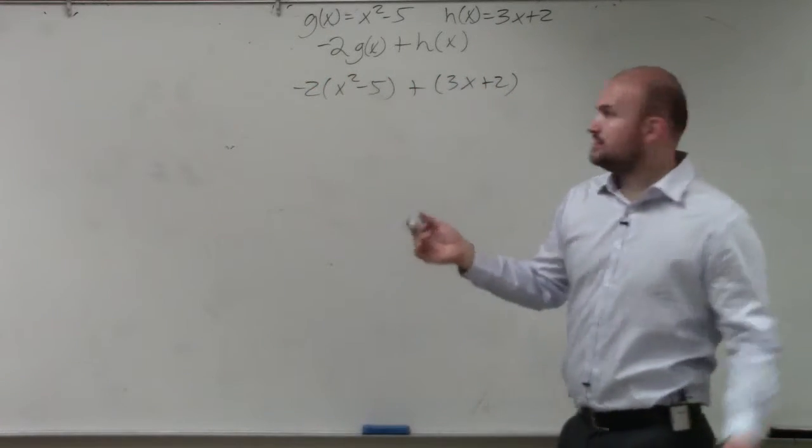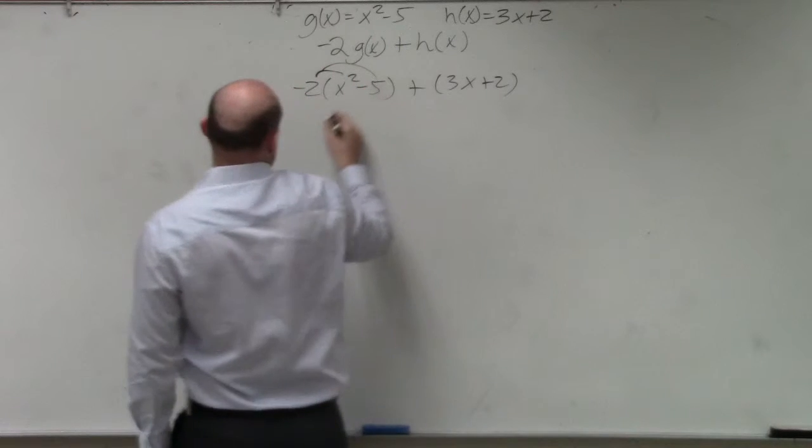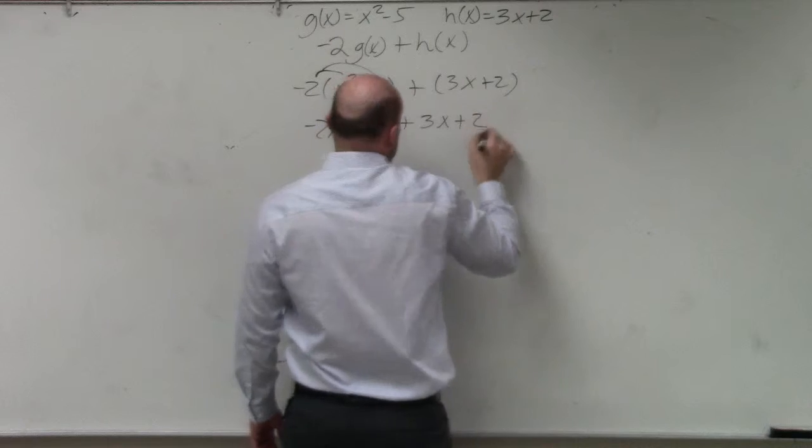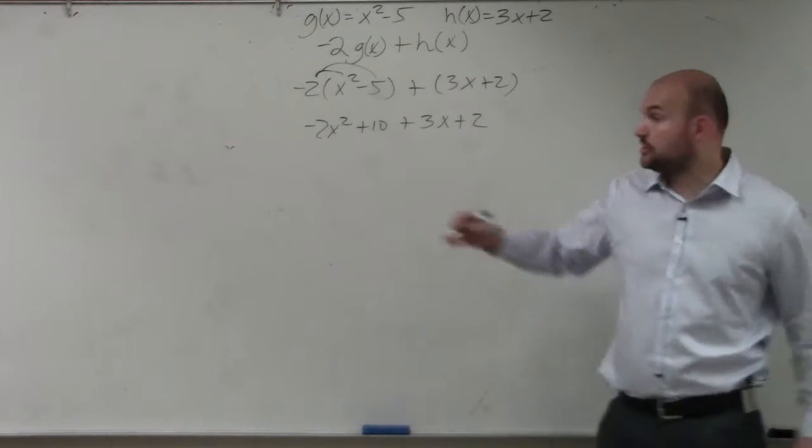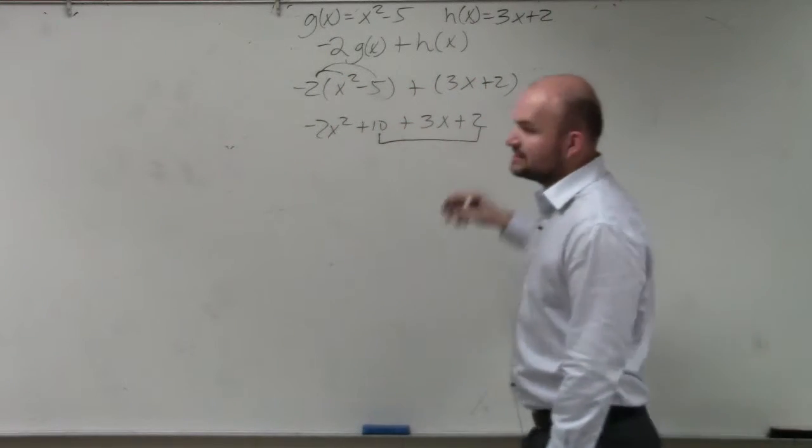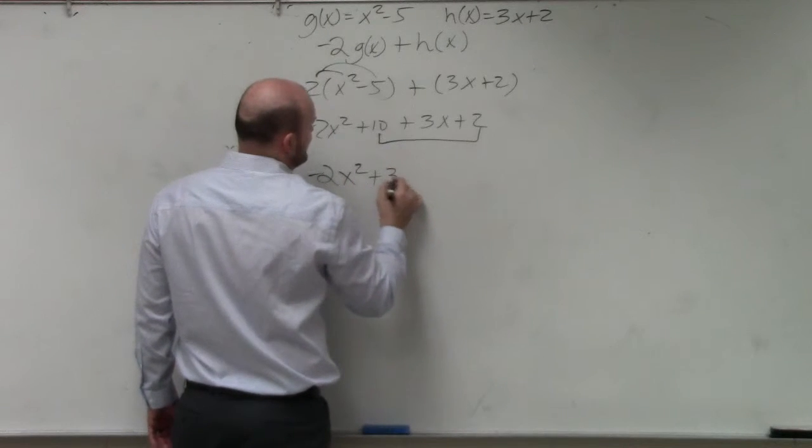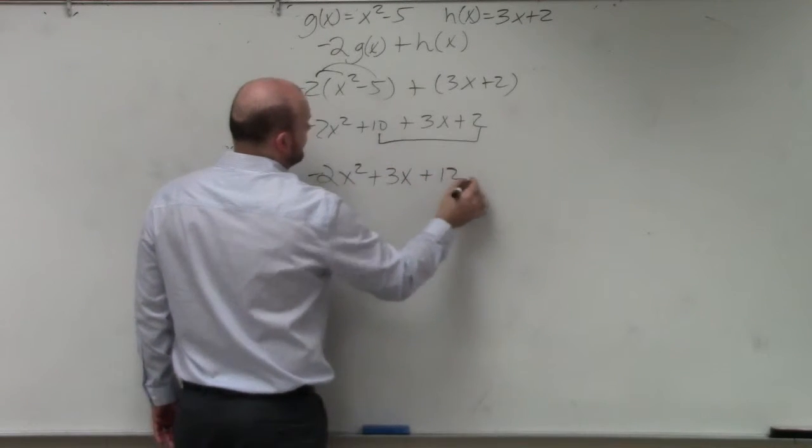Well now, I just need to simplify, apply just straight up property. Negative 2x squared plus 10 plus 3x plus 2. Now I just combine like terms. The only like terms that I have is my 10 and my 2. So my final answer is 2x squared plus 3x plus 12.